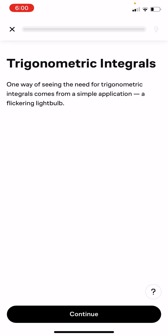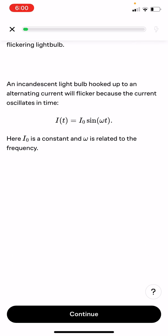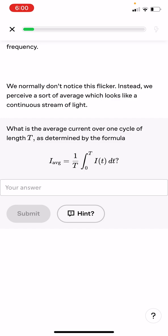One way of seeing the need for trigonometric integrals comes from a simple application: a flickering light bulb. An incandescent light bulb hooked up to an alternating current will flicker because the current oscillates in time. I(t) equals I₀ sine ωt with frequency ω. Here I₀ is a constant and ω is related to the frequency. We normally don't notice this flicker. Instead we perceive a sort of average which looks like a continuous stream of light. What is the average current over one cycle of length T as determined by the formula?